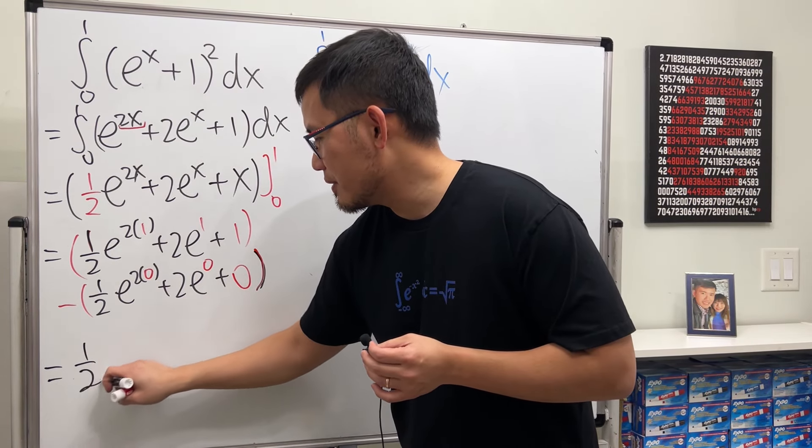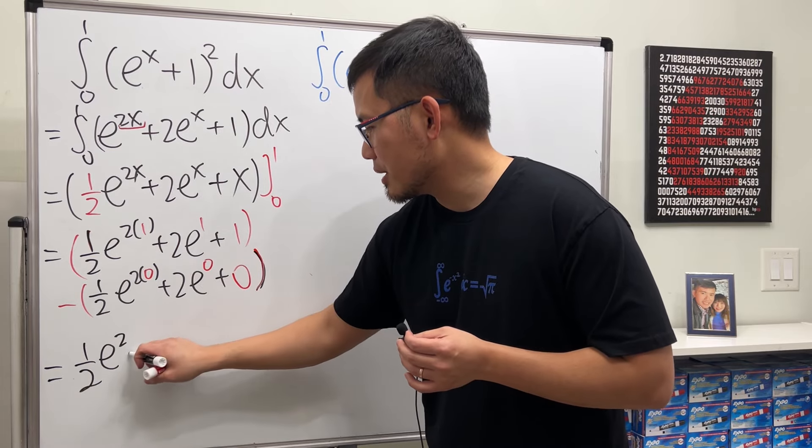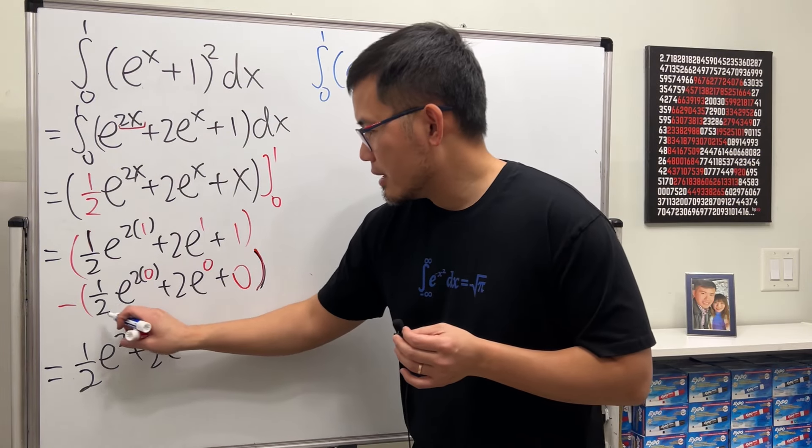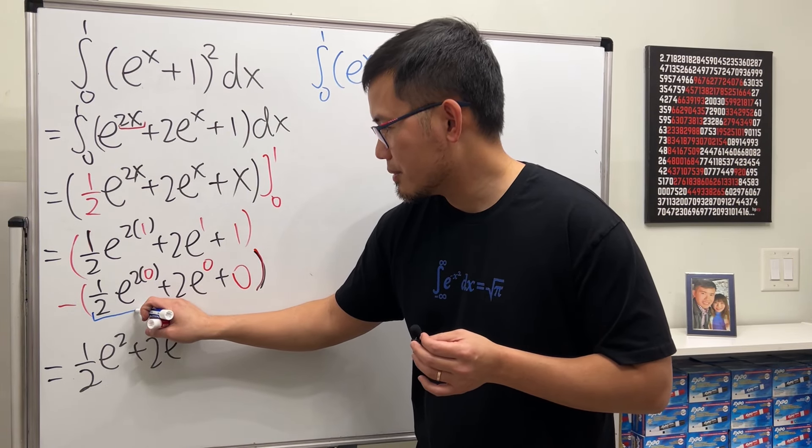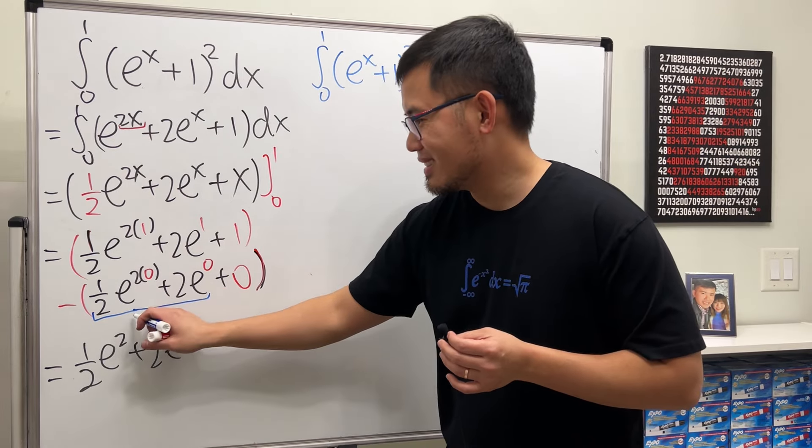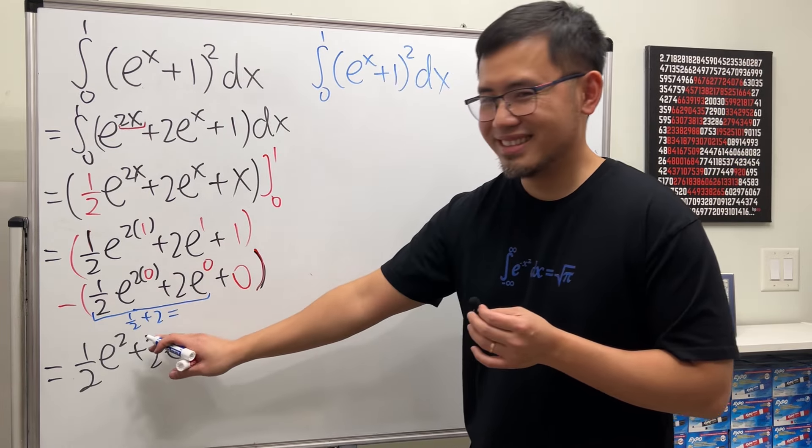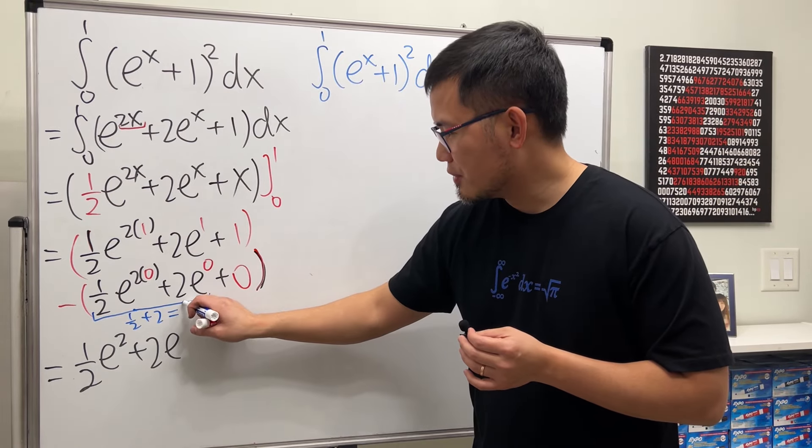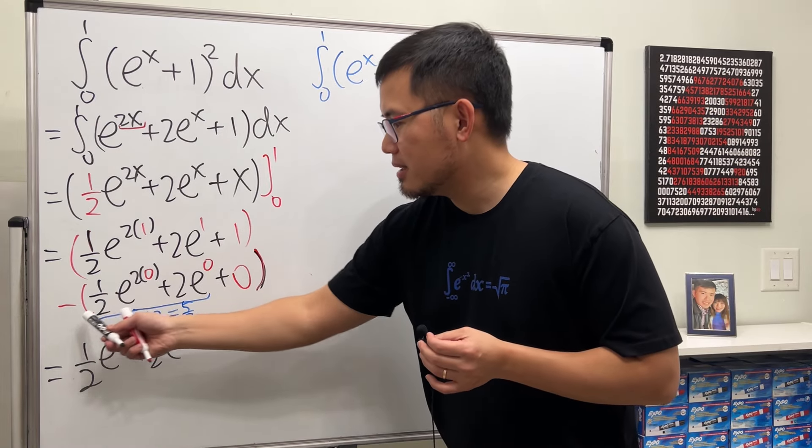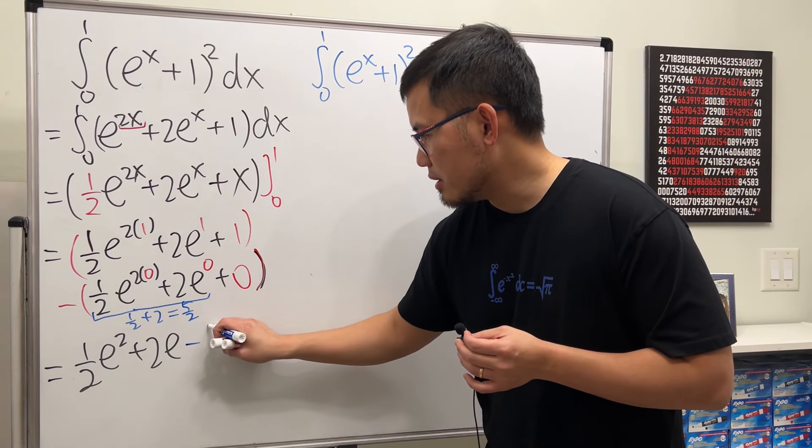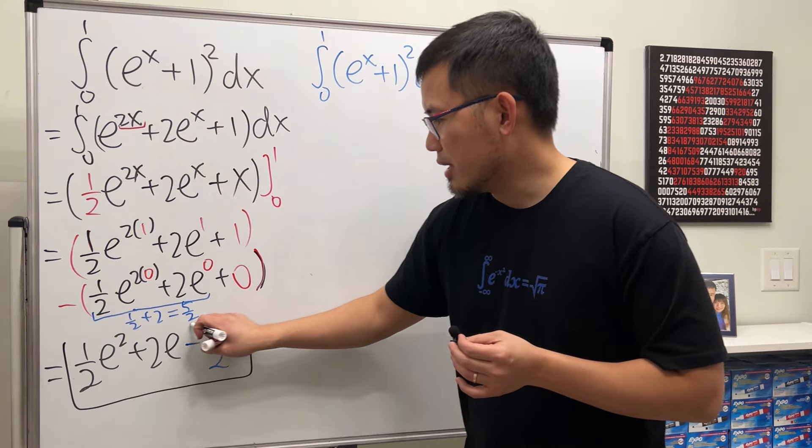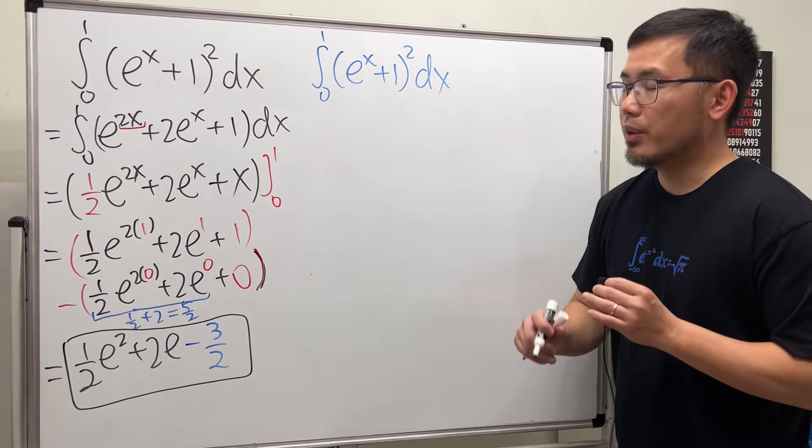This is just 1 half e to the 2nd, and then plus 2e to the 1st, and then how about the numbers? This right here is 1 half, and then plus 2. 1 half plus 2 is 5 over 2, and then 1 minus 5 over 2, we get minus 3 over 2. And that is the correct answer for this integral, and we are done.